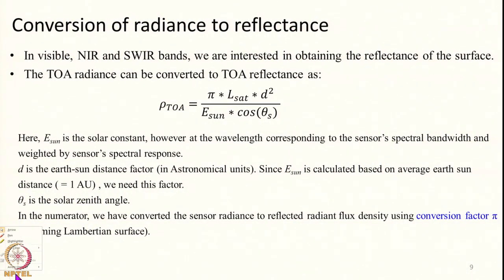Here in this slide, we are first going to calculate what is known as TOA reflectance. What is TOA reflectance? It is the reflectance recorded at the top of atmosphere — that is, reflectance obtained without any atmospheric correction.